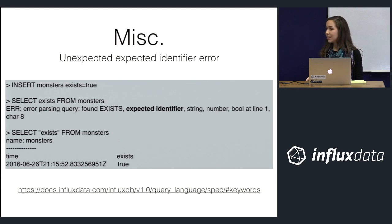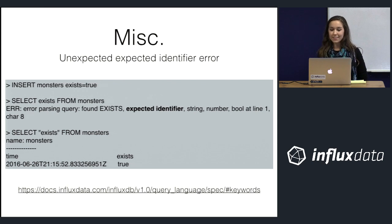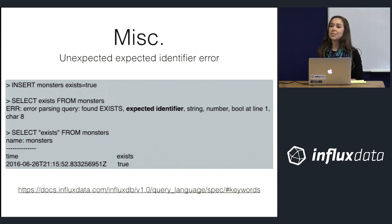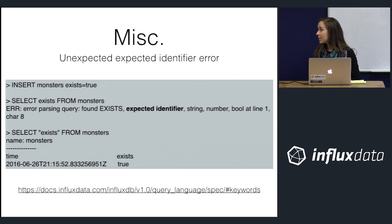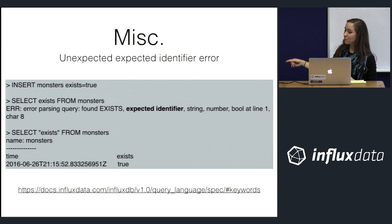The last tip is what to do if you're getting an 'expected identifier' error. Say you write data like 'insert monsters exists=true' and then querying it gives you: 'error parsing query: found EXISTS, expected identifier.' Assuming no other problems with your query, one of your identifiers might be an InfluxQL keyword — in this case, 'exists' is one. To query it, just double-quote it. Identifiers include database names, retention policy names, measurement names, field keys, and tag keys. There's a link in the docs with a complete list of InfluxQL keywords.